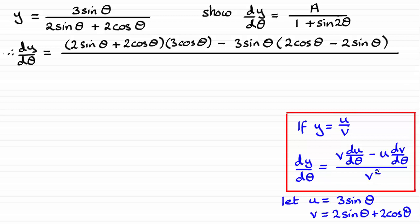Now it's all divided by the bottom of the fraction squared. So we've got all of 2 sine theta plus 2 cosine theta, and all of that is squared.